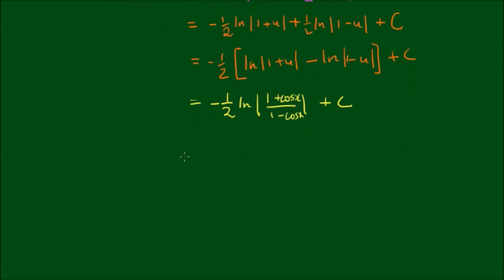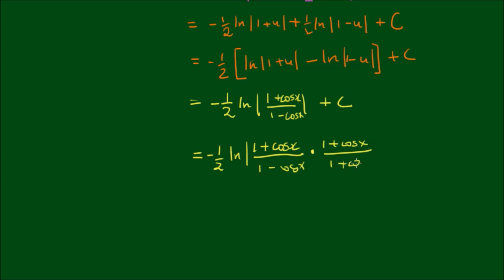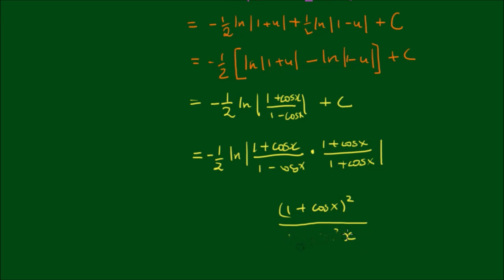Now let's simplify further. We have negative one half times log of (1 + cos x) over (1 − cos x). Multiplying inside by (1 + cos x) over (1 + cos x) — effectively multiplying by 1 — the denominator becomes a difference of two squares: 1 minus cos²(x), which by the Pythagorean identity is sin²(x). The numerator becomes (1 + cos x) all squared.